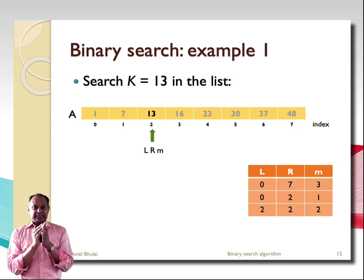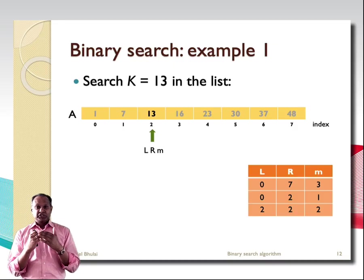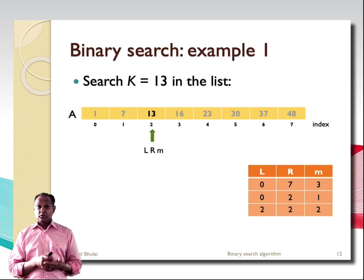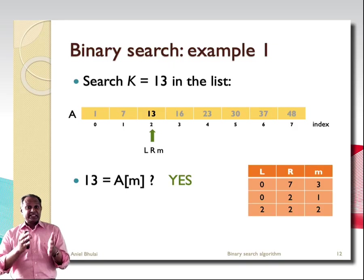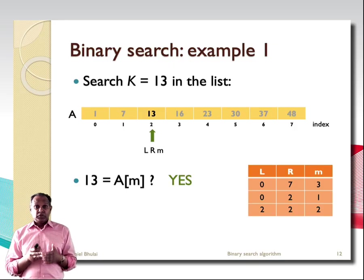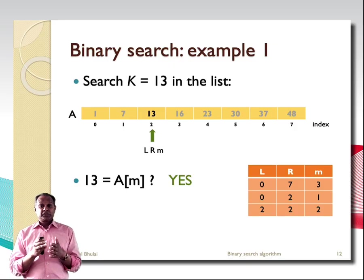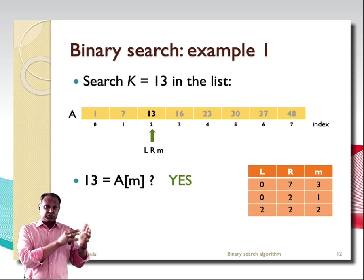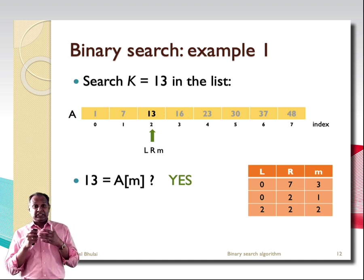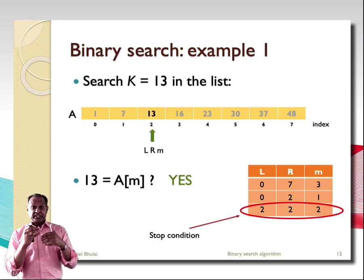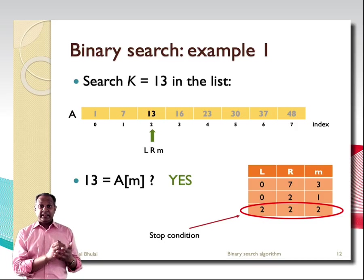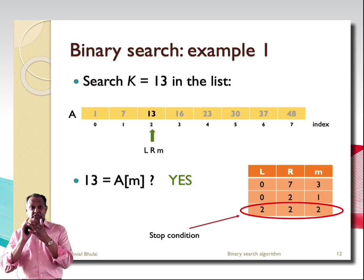In this iteration, we check whether 13 is equal to the element at position M. It is — 13 equals the element at position M, which is 13. This is our stop condition. The algorithm returns the position of the element, which is 2 in this example, and the algorithm stops.